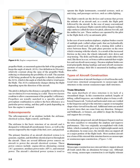As technology progressed, aircraft designers began to enclose the truss members to streamline the airplane and improve performance. This was originally accomplished with cloth fabric, which eventually gave way to lightweight metals such as aluminum. In some cases, the outside skin can support all or a major portion of the flight loads. Most modern aircraft use a form of this stressed skin structure known as monocoque or semi-monocoque construction.